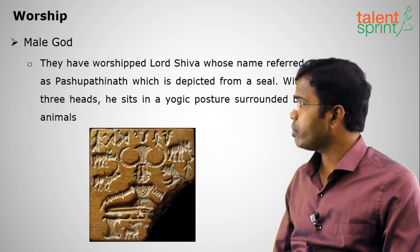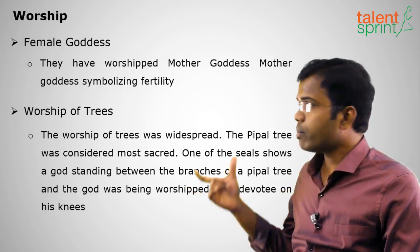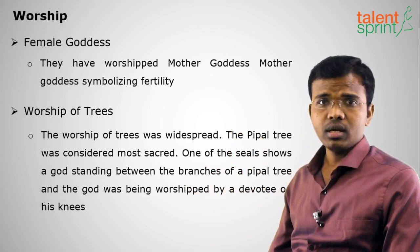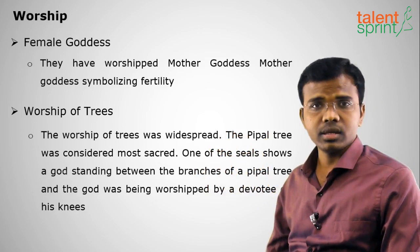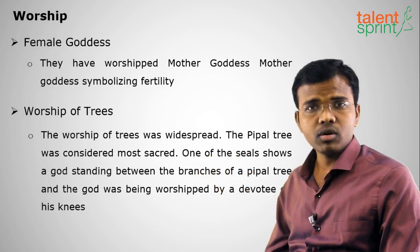For the female goddess, they worshipped a Mother Goddess symbolizing fertility. She was depicted with a plant coming out of a woman's womb, representing the Mother Goddess. They also worshipped trees and animals.